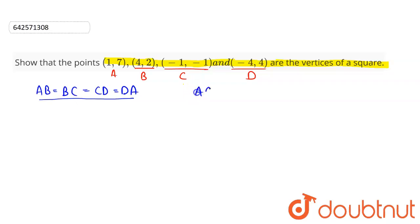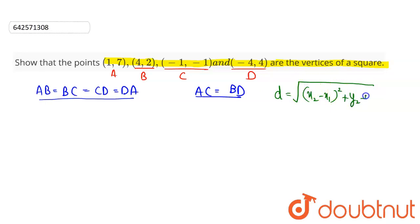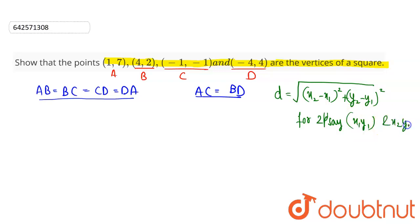Also, the diagonal AC must be equal to the other diagonal BD. The distance between any two points can be found using the distance formula: d = √[(x₂ − x₁)² + (y₂ − y₁)²], for two points (x₁, y₁) and (x₂, y₂).